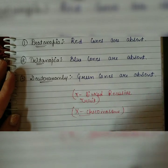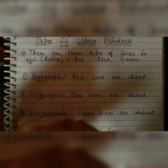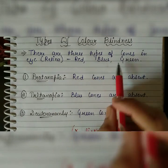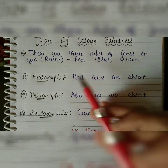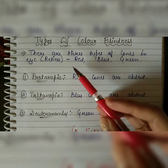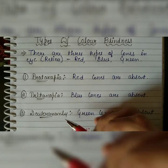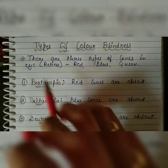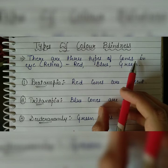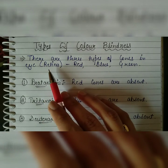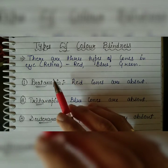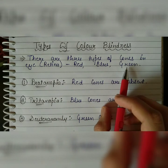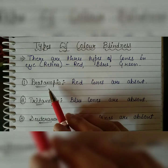Now, what are the types of color blindness? There are basically three types: first is protanopia, second is tritanopia, and third is deuteranomaly. Before explaining these, note that there are three types of cones in the retina of the eye — red, blue, and green.